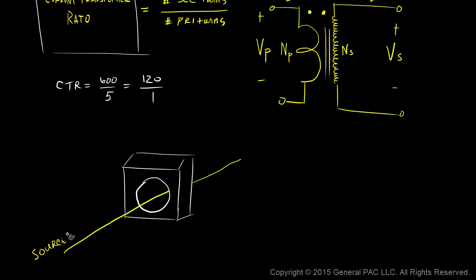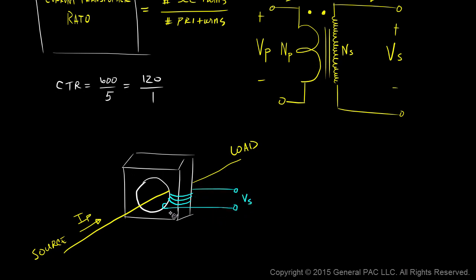The source is on one side and the load on the other, so current flows through the window — this is our primary current. In terms of secondary windings, we draw the windings around the window CT. The secondary voltage is present, the number of secondary turns is 1, 2, 3, and 4, and the secondary current flows to a meter connected at the secondary terminals.